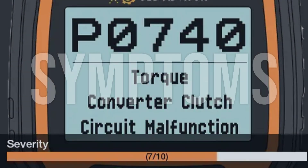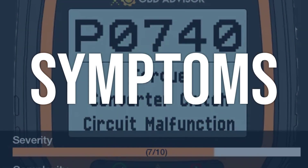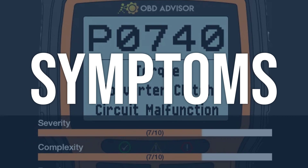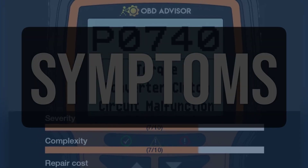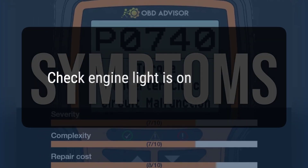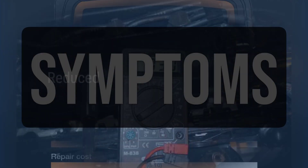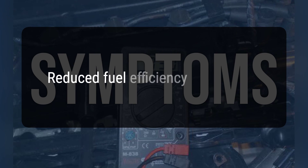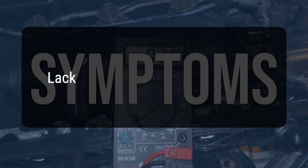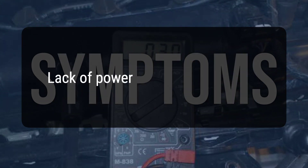When you encounter this OBD error, the vehicle typically exhibits the following symptoms: 1. Check engine light is on. 2. Reduced fuel efficiency. 3. Lack of power.